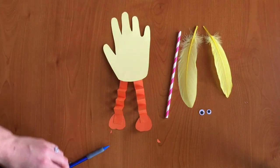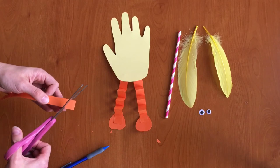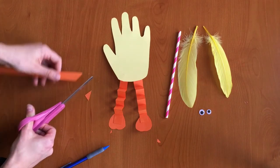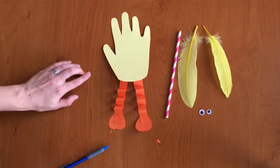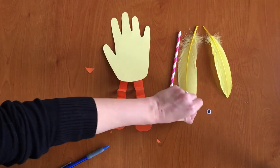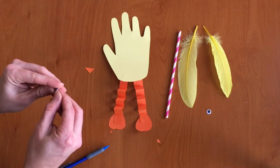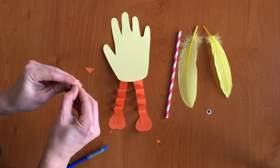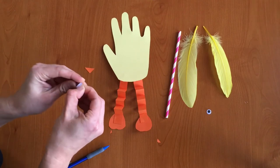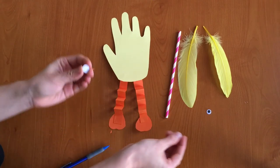Next you need to cut out a little beak. So just a little orange triangle. Let's put our chick's eyes on. So you can peel off the back of these googly eyes. Or you can use a glue dot. But the backs just peel off like that.